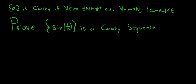In this problem we're going to prove that this sequence is Cauchy, and the sequence in question is sine of 1 over n. So this is our a_n. So, proof.